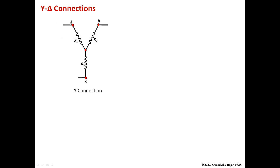The current coming from node A goes through R1, from node B through R2, and from node C through R3. That means those three resistors are not in series — the current splits at each branch. Also, those three resistors are not in parallel because the voltage through R1 is not the same as the voltage through R2 or R3, since nodes A, B, and C are three separate nodes.